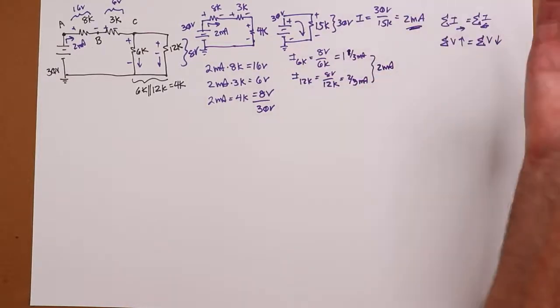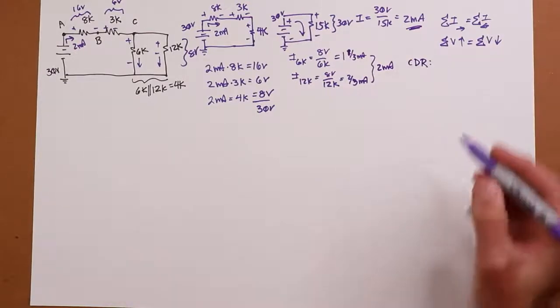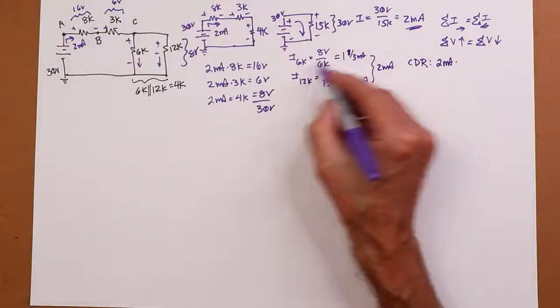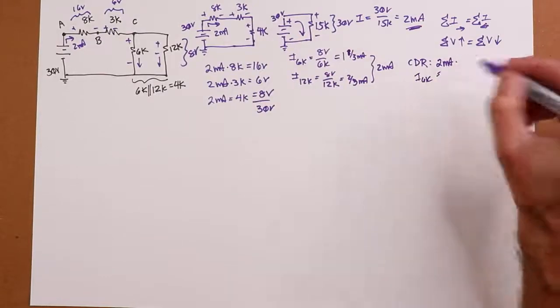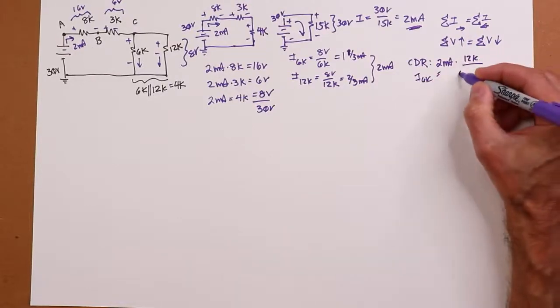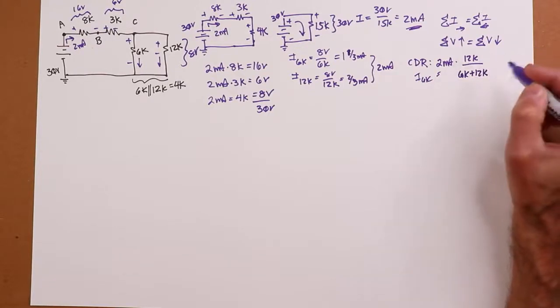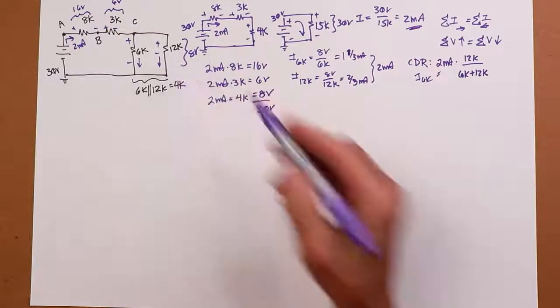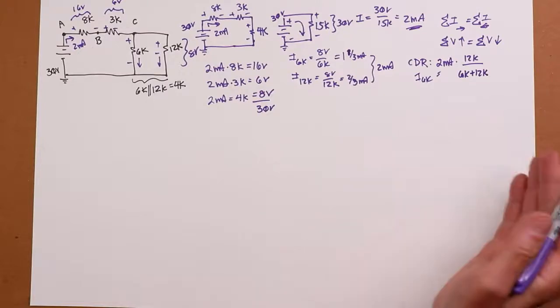Or, because there's more than one way to do this, you could use current divider rule. I know the entering current. It's two mils. So if I want to find the 6K and do the same thing. I have 6K. It's going to be two mils times, remember, it's the opposite resistor. So that would be 12K over the total of the parallel, 6K plus 12K. So that's 12 over 18 or two thirds, two thirds of two mils is the one and a third mils. And you could do the same thing with the 12K.